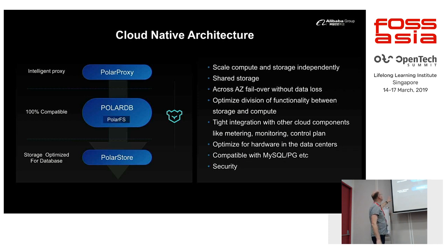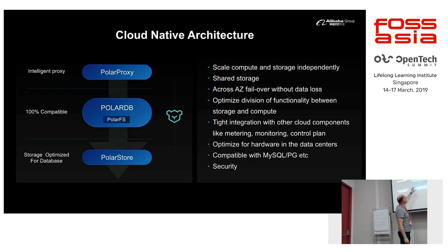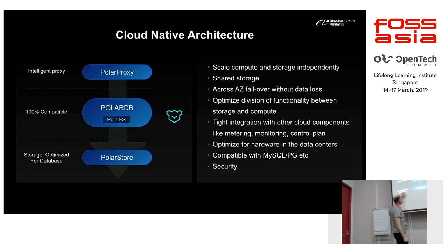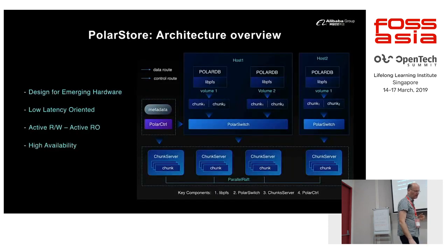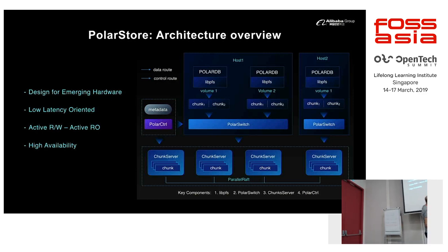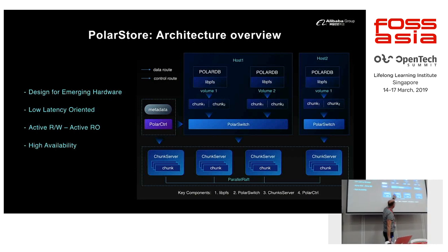These are the basic components of the PolarDB architecture. We have a proxy that handles load balancing and routes requests to the database. The database has a special file system layer that hides the distributed storage system, so to the database it looks like it is using local storage. Actually it's using a special database-optimized storage called PolarStore, which is a distributed storage with multiple chunks where the data is stored.